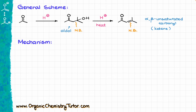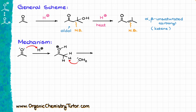Now let's take a look at the mechanism of this reaction. Since we're working in acidic conditions, the very first thing that happens is the protonation of our carbonyl, giving us a protonated carbonyl intermediate, which then loses a proton to whatever conjugate base is floating around — I'll show water for simplicity — giving us our enol.